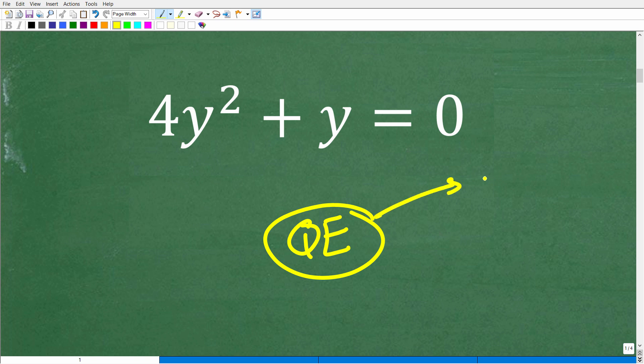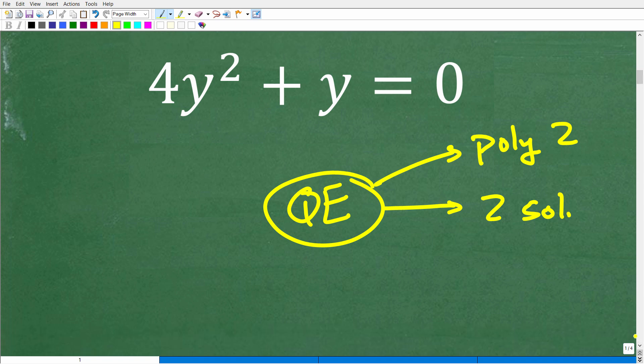So the first thing, again, is that we are dealing with a polynomial that is degree two. And there's always going to be two solutions. But what are the methods that we can use to solve quadratic equations? Well, it all depends on the equation.